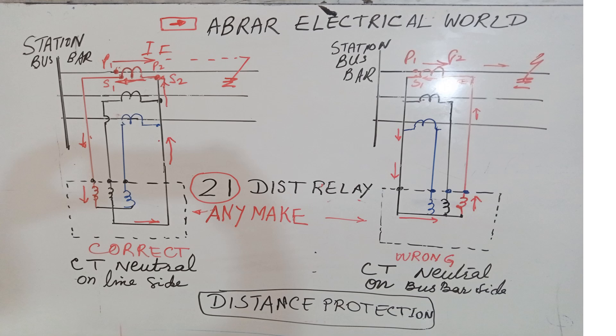These CTs are in the high-voltage yard. The connections will come to a terminal block in the control room or protection panel, and from there you connect the distance relay. Whenever there is a mal-operation of the relay, please check these connections to ensure they are made correctly — not like the wrong diagram. In summary, for the protection of a line, you should always make the CT neutral on the line side. Otherwise the relay will mal-operate and the direction will be reversed.